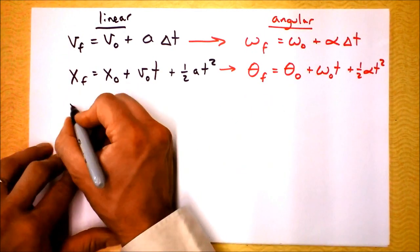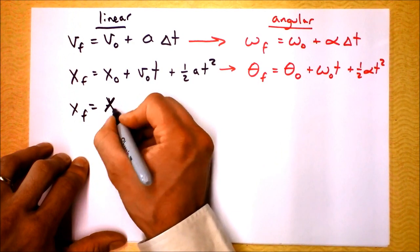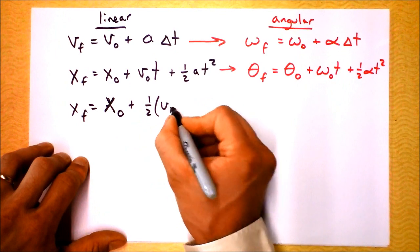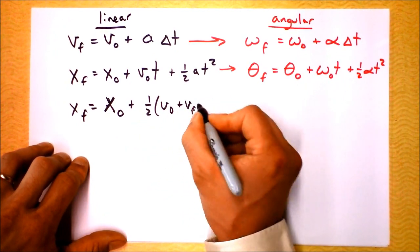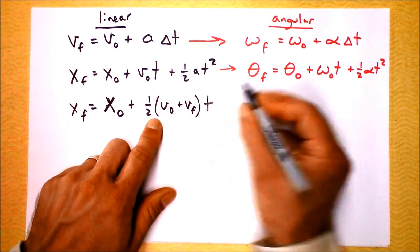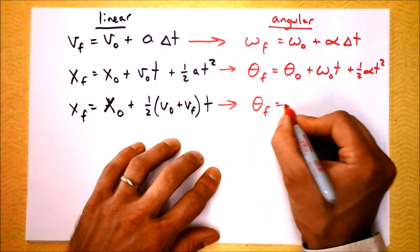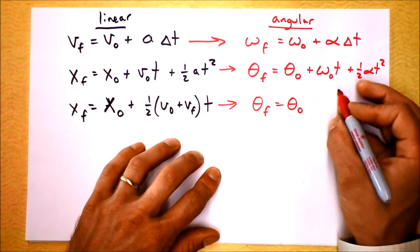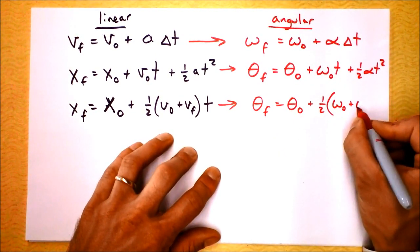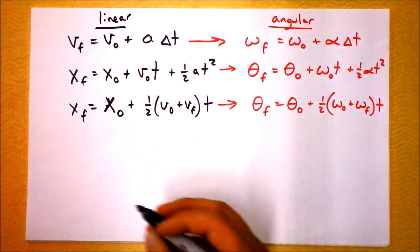And there's another one that says that final position is, well I guess it's, well it's initial position. We've got to consider where we start, right? Initial position plus 1 half initial velocity plus final velocity. This is 1 half initial plus final is average, so it's average velocity times time. And that's got an angular analog that looks like this. Your final angle is the angle at which you started plus 1 half your initial angular velocity plus your final angular velocity times time. All the same.